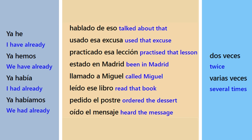What's the word for 'ordered'? PEDIDO. How would you say 'ordered a coffee'? PEDIDO UN CAFÉ. What's the word for 'already'? YA. And how do we say 'we have'? HEMOS.